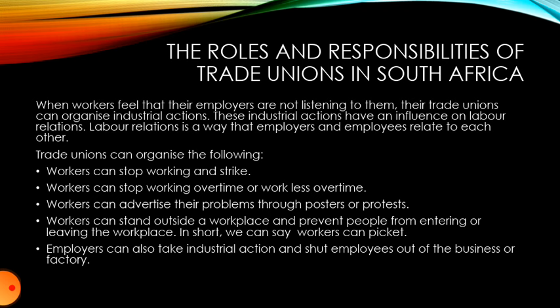Trade unions can organise the following: workers can stop working and strike; workers can stop working overtime or work less overtime — overtime means working more than the required hours; workers can advertise their problems through posters or protests; workers can picket — that is, stand outside a workplace and prevent people from entering or leaving. Employers can also take industrial action and shut employees out of the business or factory.